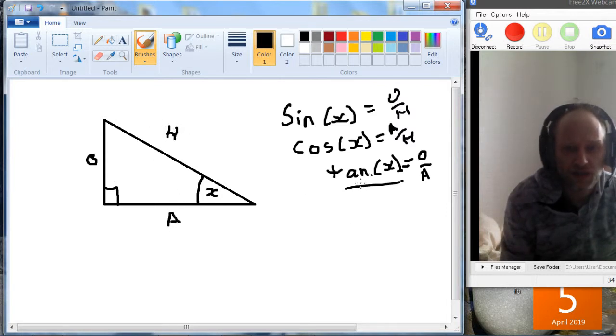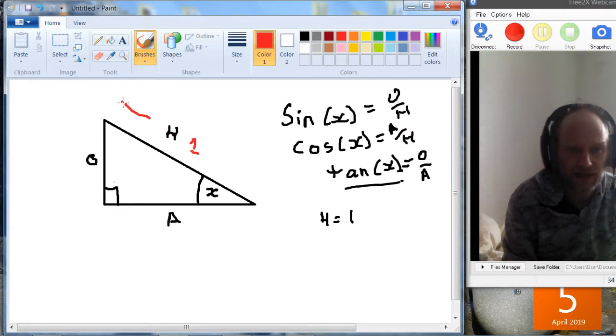Okay, so now we're going to look at, well, what if the hypotenuse is equal to 1? So if this is equal to 1, this length is 1 along here, then what are a and o?